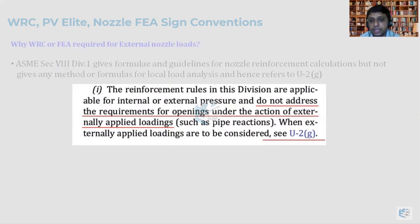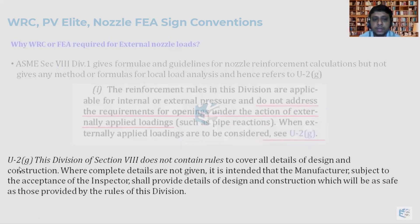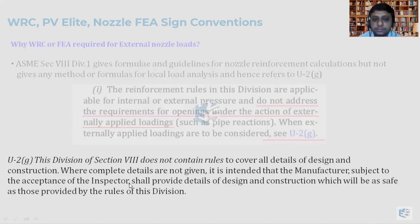When such loadings are applicable, we have to refer to U2G. U2G states: 'This division of Section 8 does not contain the rules to cover all details of design and construction. Where complete details are not given, it is intended that the manufacturer, subject to the acceptance of the inspector, shall provide details of design and construction which will be as safe as those provided by the rules of this division.' So U2G says that while the method is not given in Division 1, you must adopt some other method which will be as reliable as ASME Section 8 Division 1 and acceptable to the authorized inspector.